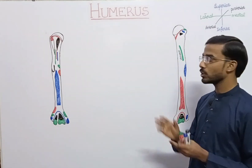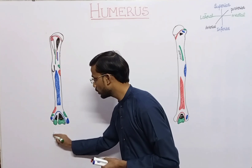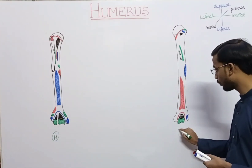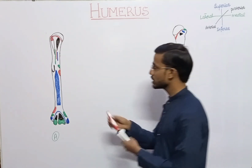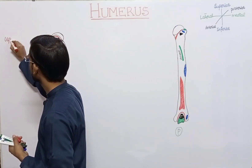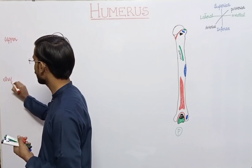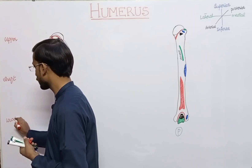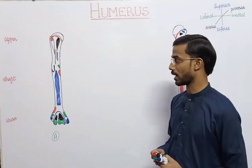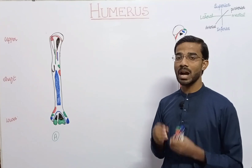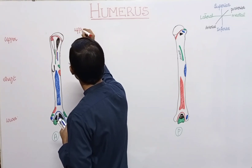Here you can see there are two humerus — this is the anterior view and this is the posterior view. We divide the humerus into three parts: first is the upper part, second is the middle part or shaft, and third is the lower part. We will first discuss the upper part of the humerus.